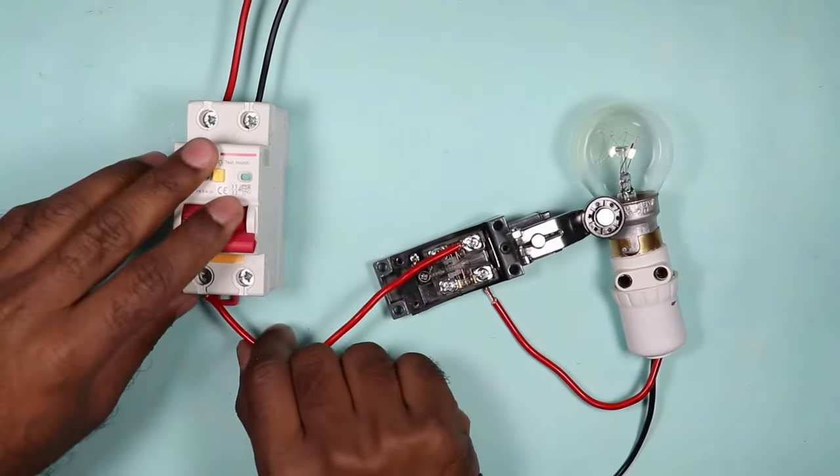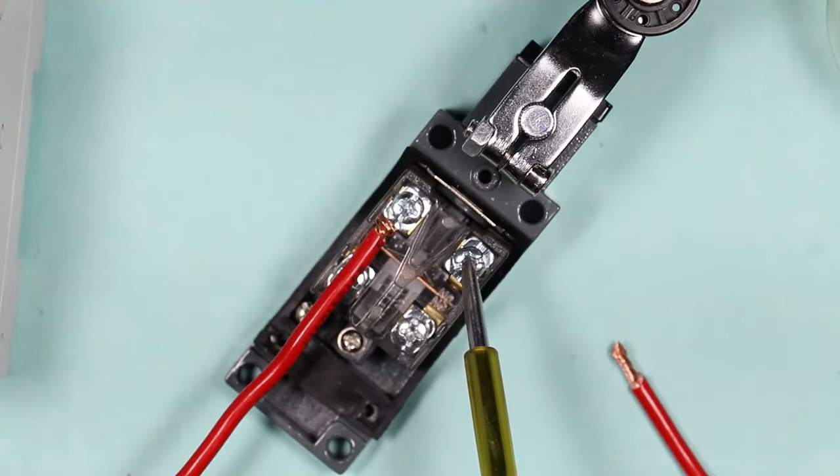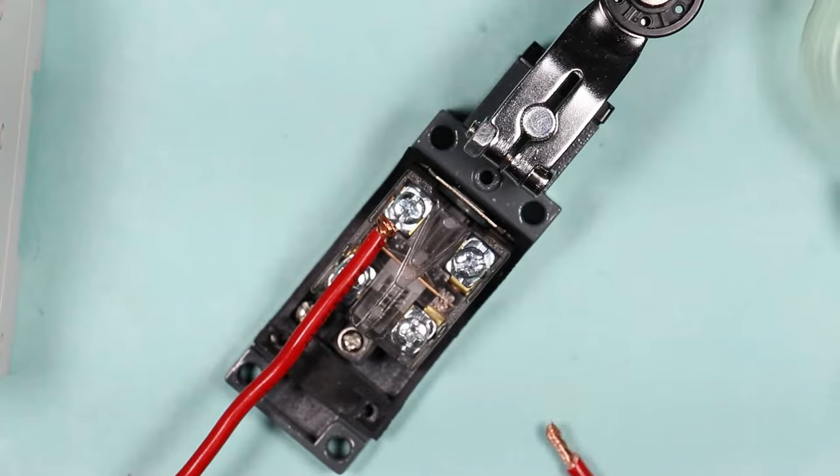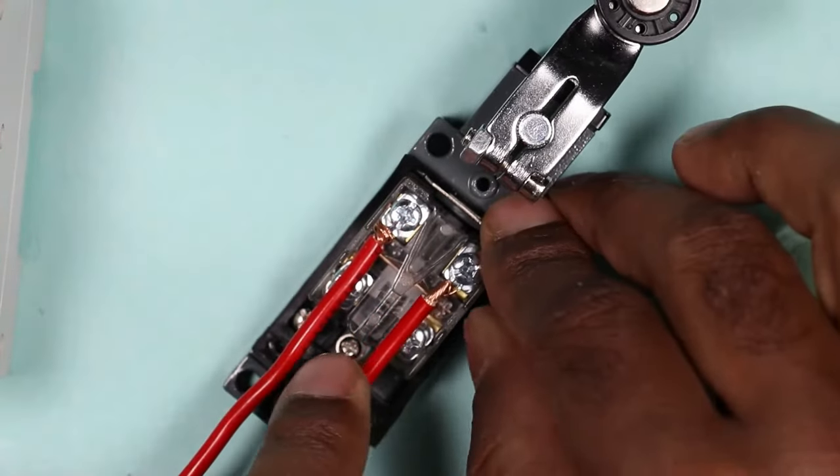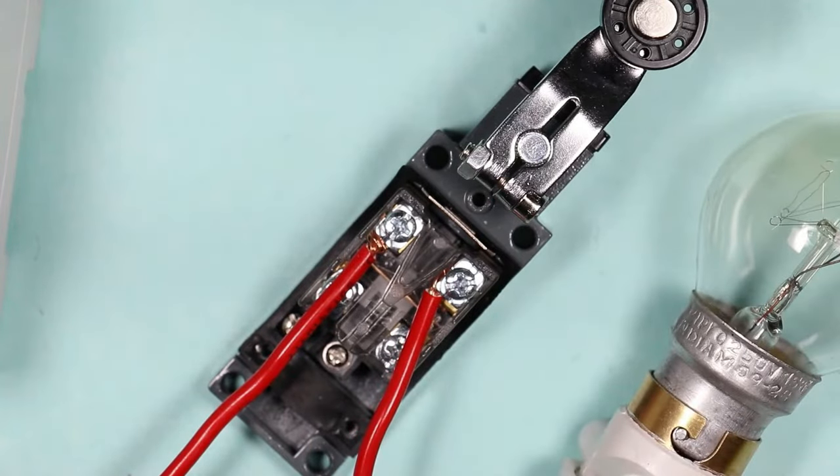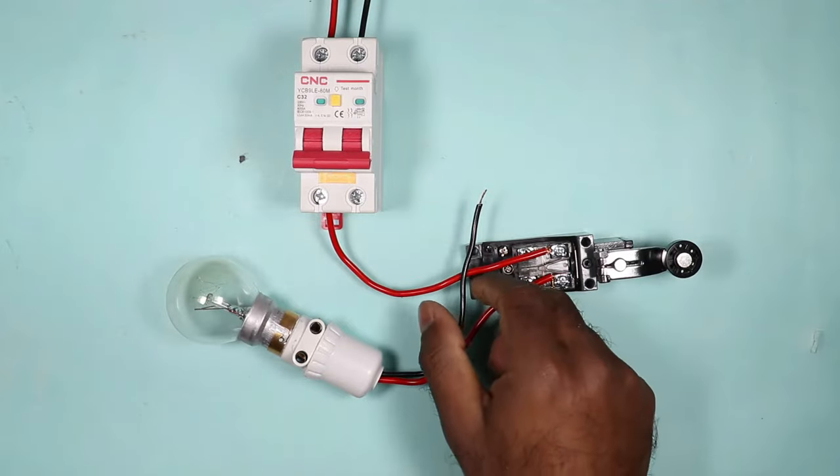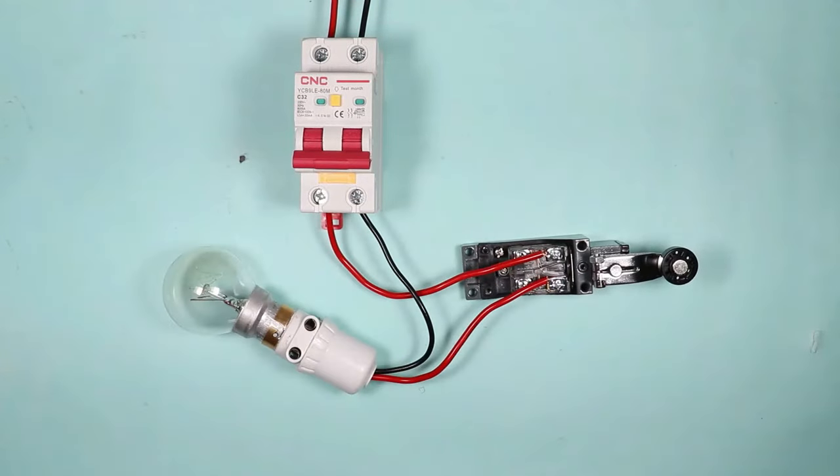For now, I am explaining connection with NO contact. Later, I will explain with NC contact. We will receive output of this NO contact at this point. So I will connect this phase wire of lamp to this point. This means phase supply will reach to lamp. We also need to provide neutral power supply to this lamp. So I will directly connect this neutral wire with neutral point of MCB.